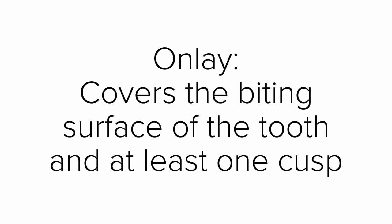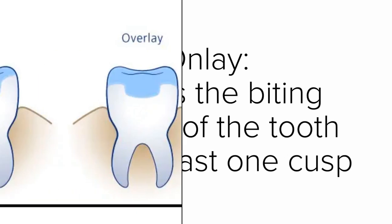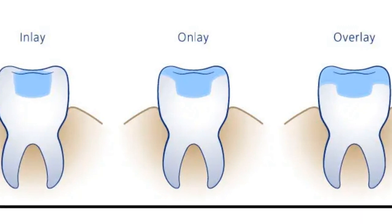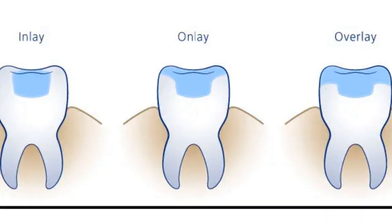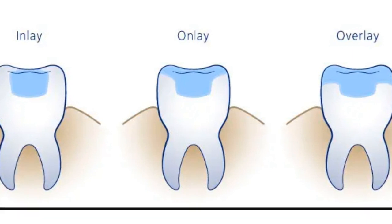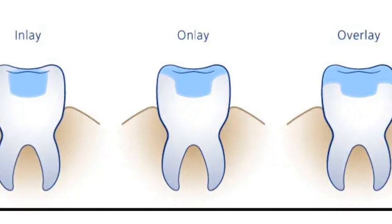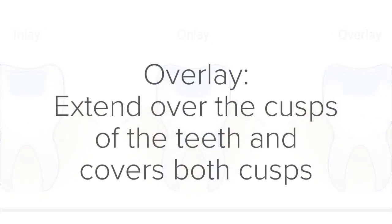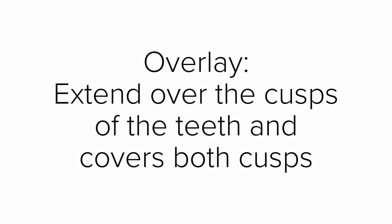As you can see, an overlay is over-extended — it covers both cusps of the tooth, both biting surfaces. So an overlay extends over the cusps of the teeth and covers both cusps.